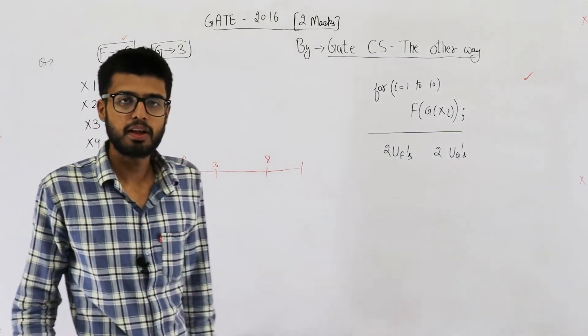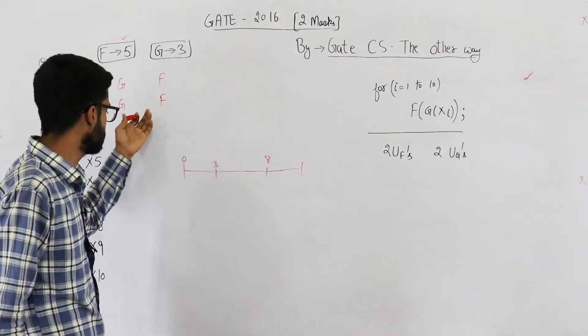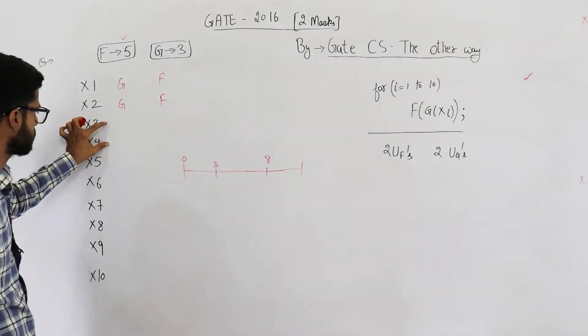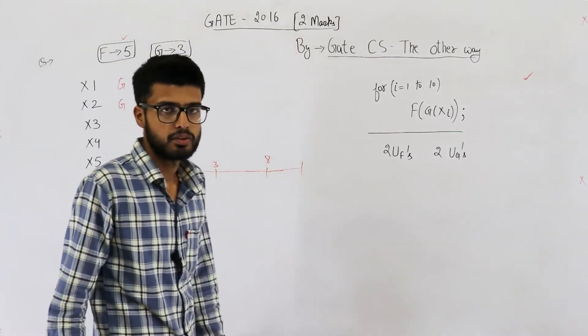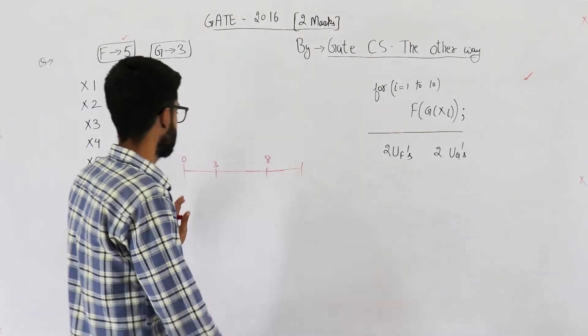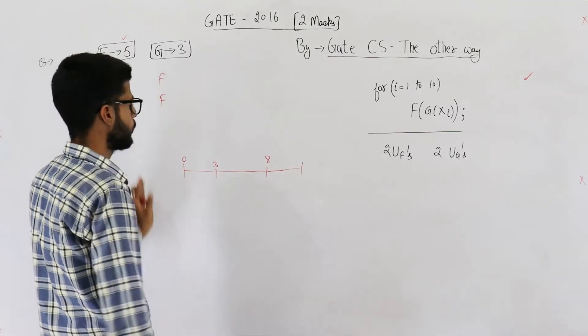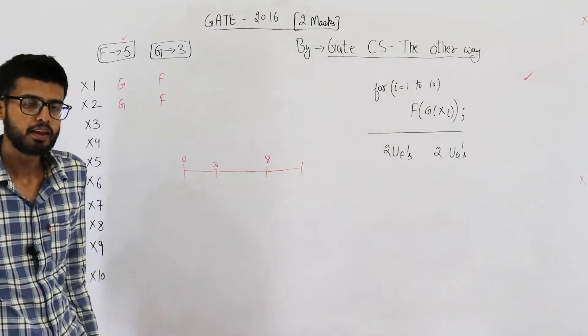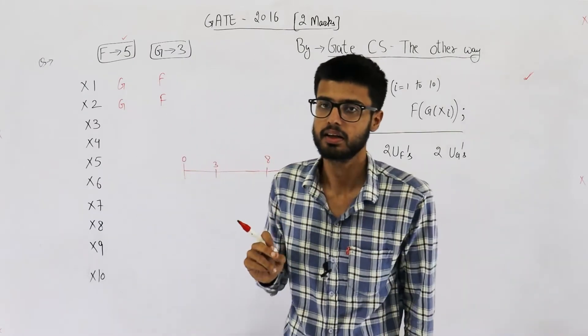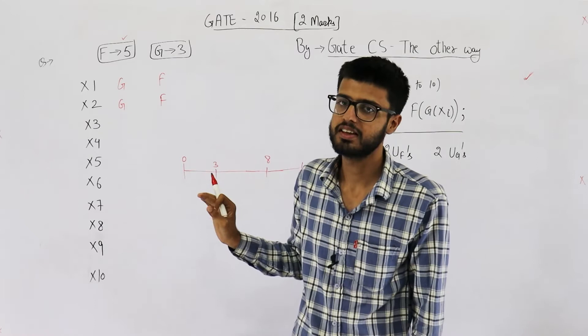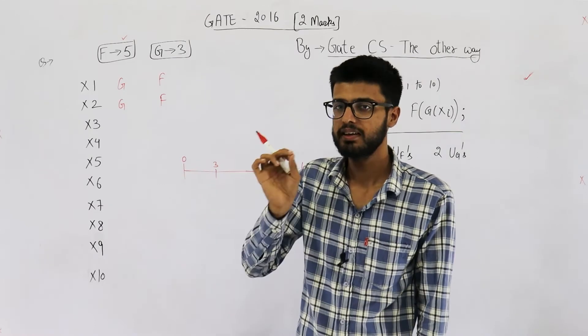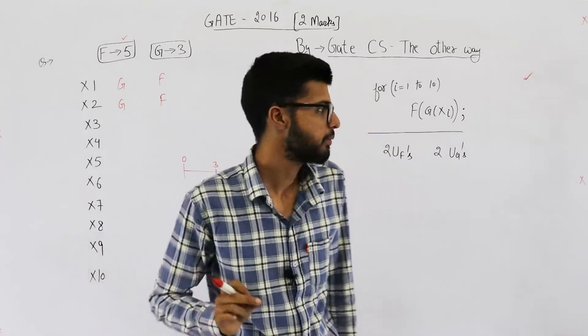And similarly, this process can be repeated five times for this pair, this pair, this pair and this pair. So, in total, the time taken is 8 into 5, 5 is 40. You might think that the answer is 40, but it's incorrect. This question is from CAO. It's actually a general aptitude question, but they are using the concept of pipelining here.